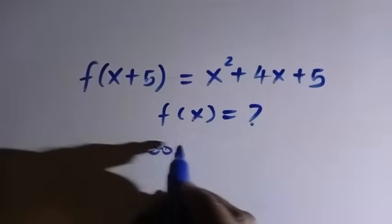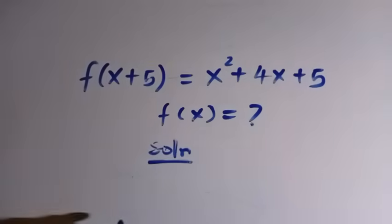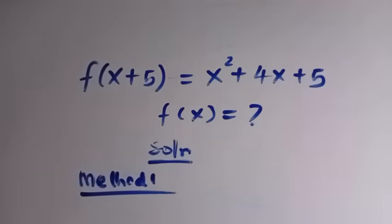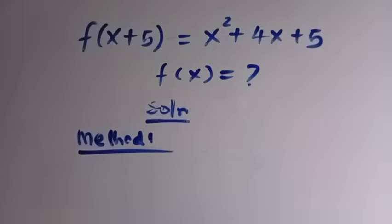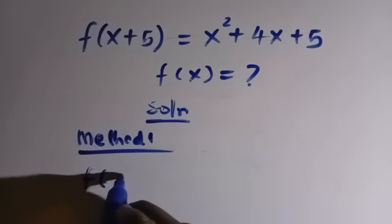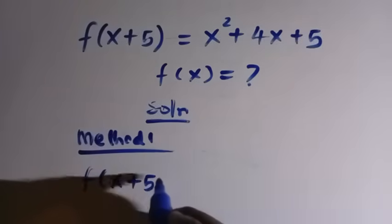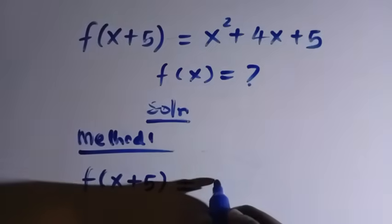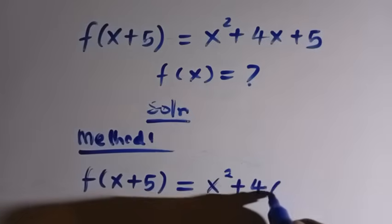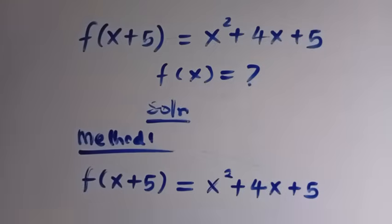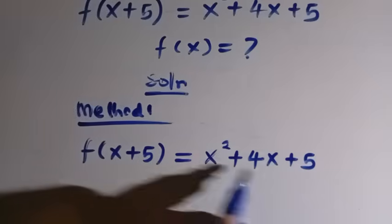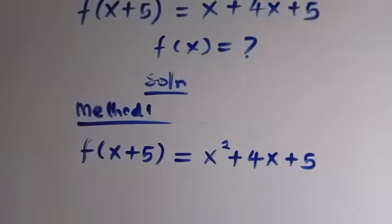Let's consider the solution from here, and I'll call this Method 1. For the first method, I'm going to use form manipulation to solve this. From the left hand side, we have f of x plus 5 equals x squared plus 4x plus 5, which is the given question. This is not factorizable, so we cannot factorize this.